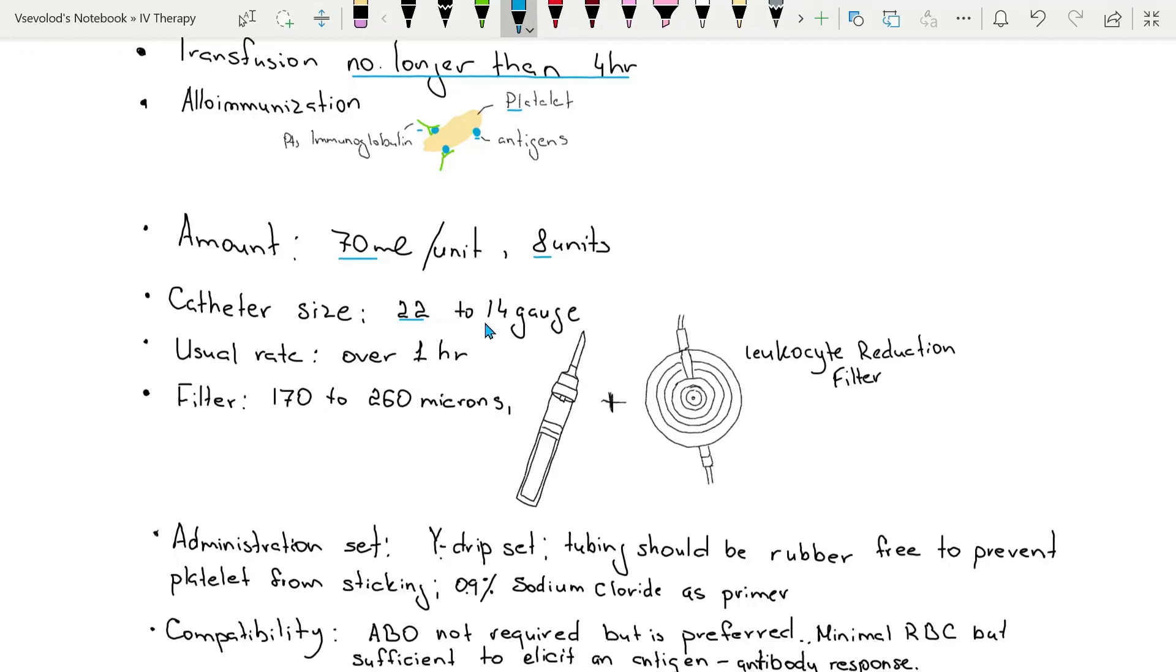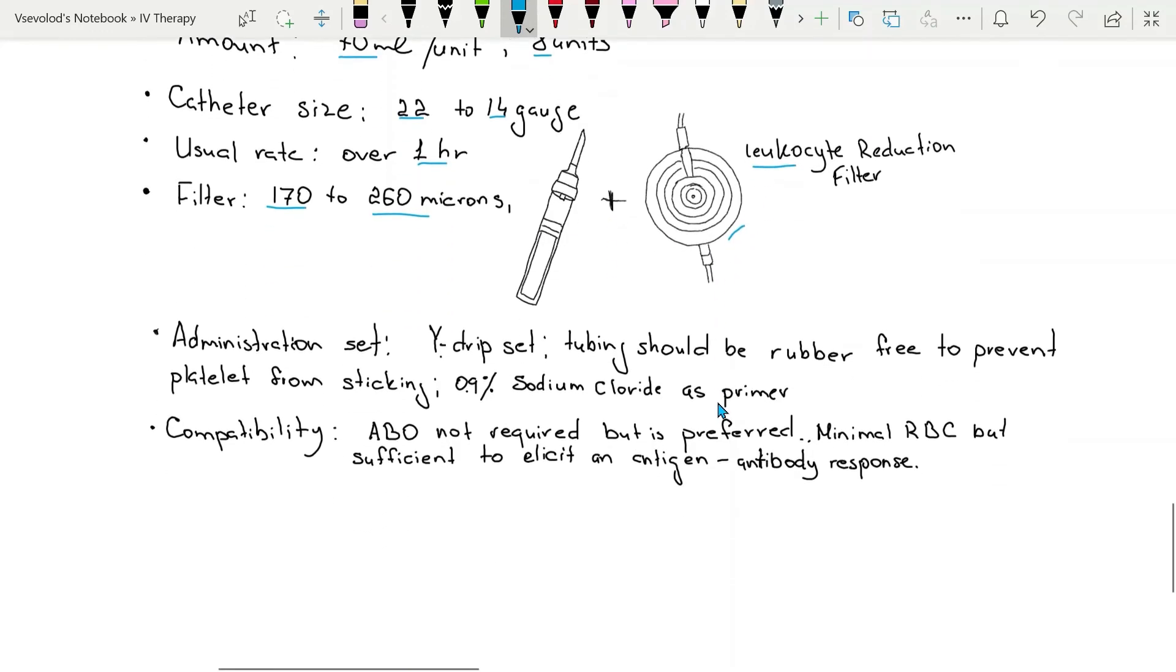Catheter size is usually 22 to 14 gauge. Usual rate is over one hour. Filter is used 170 to 260 microns and leukocyte reduction filter may be needed.